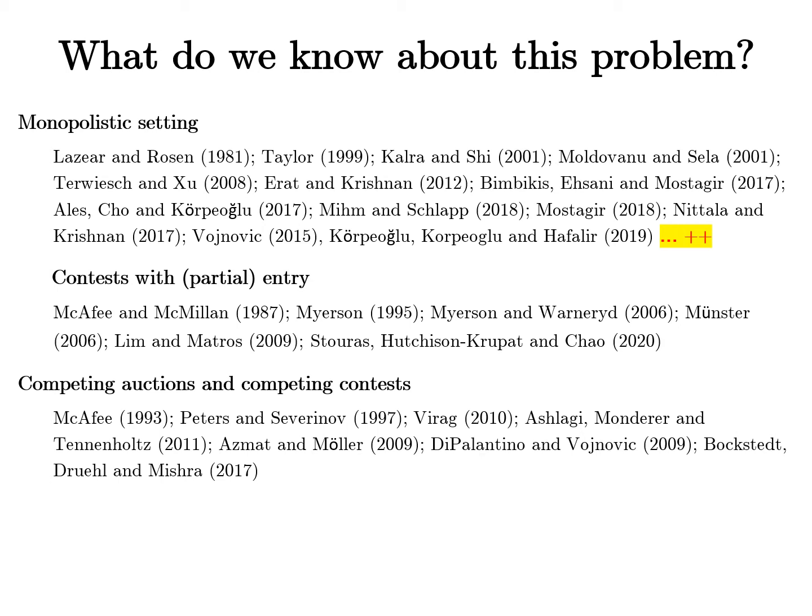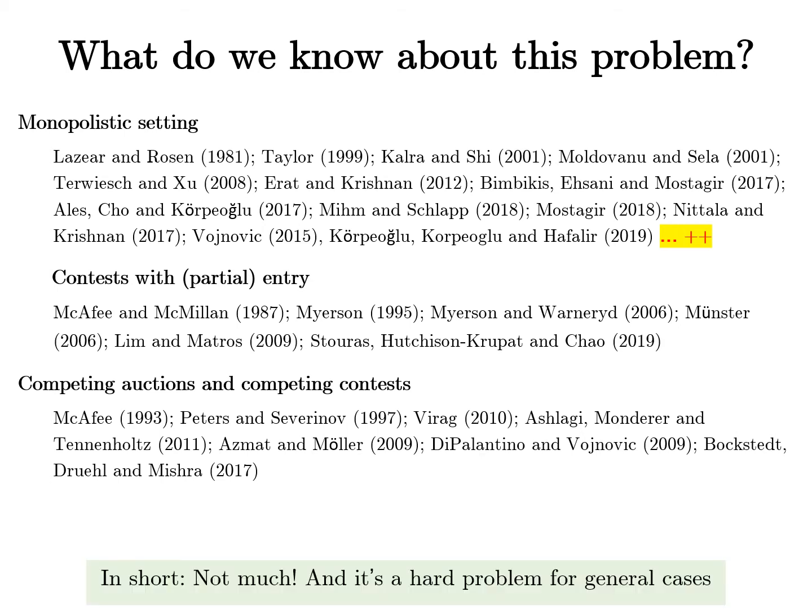First, there is no analog to the revelation principle to simplify strategic behavior. Second, there is infinite regress: an allocation chosen by a firm depends on the allocation of their competitors, and so on and so forth. So the space of actions for firms is quite large, and it's unclear whether a fixed point would even exist. In short, we don't know much, and it's a hard problem in general.